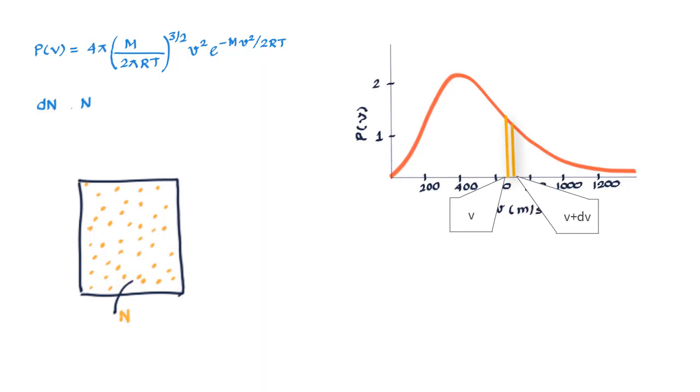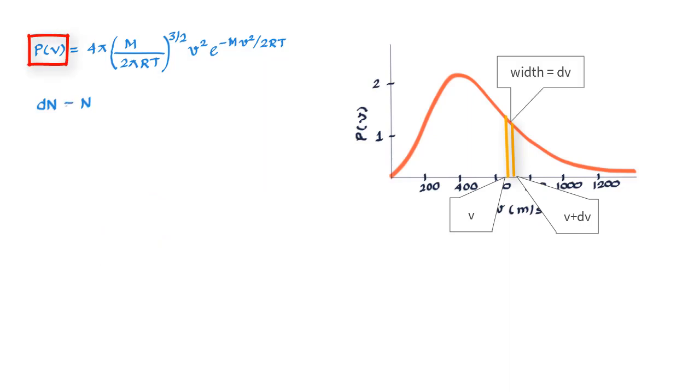Now the question is that can we find a function P(v) such that dn is equal to n multiplied by P(v) into dv, and if we can then maybe rearrange this equation.